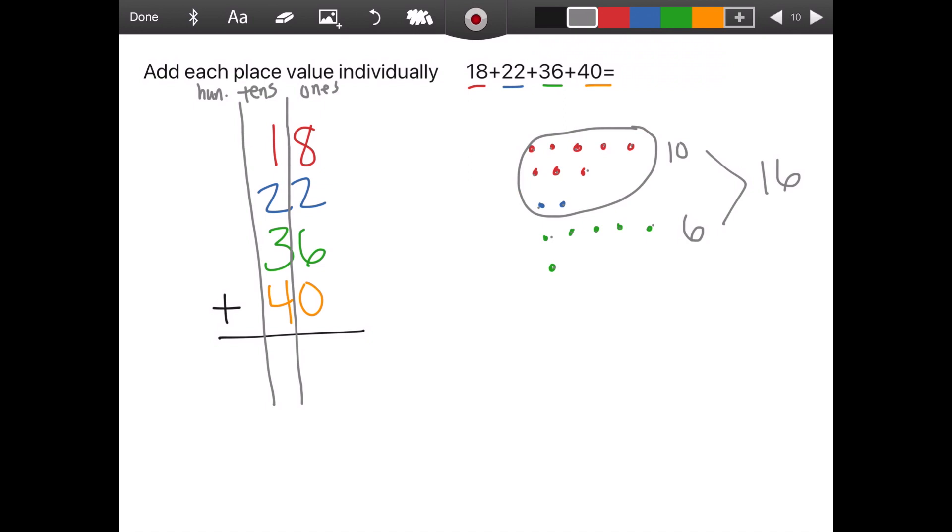Remember, we're adding each place value individually. So those are the ones. And then I can write that underneath the equation. Then I can move on to adding the tens. So I have one red, two blues, three greens, and four yellows, creating a nice pattern. Look at that. And again, I'm counting them. And when there's a group of 10, I'm going to circle that. It looks like we have all of them, which is 100. We write it underneath the equation. So we have those two partial sums. The by place value adding up 16 and 100 equals 116.